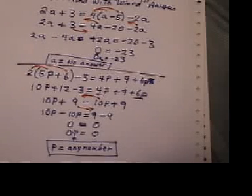So, just looking at these two questions where you get weird answers. If you get something like the first one, where we had zero equals negative 23, which you know is never correct, then you can say there's no answer. If you get it down here where you say zero equals zero, which you know is always correct, then you can say any number works. So that's how you deal with weird answers.